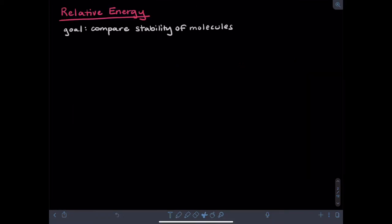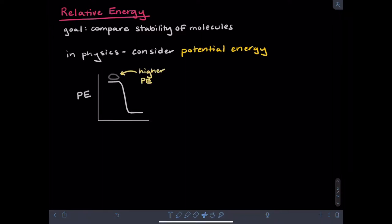When thinking about thermodynamics, our goal is really judging the relative energy of different molecules, essentially how stable they are. In physics, one form of energy that's commonly considered is potential energy. For example, you could consider the potential energy of this blob, maybe a rock, at the top of a cliff. This would be considered to have high potential energy. If instead our blob resided lower on the graph, we would say it has lower potential energy.